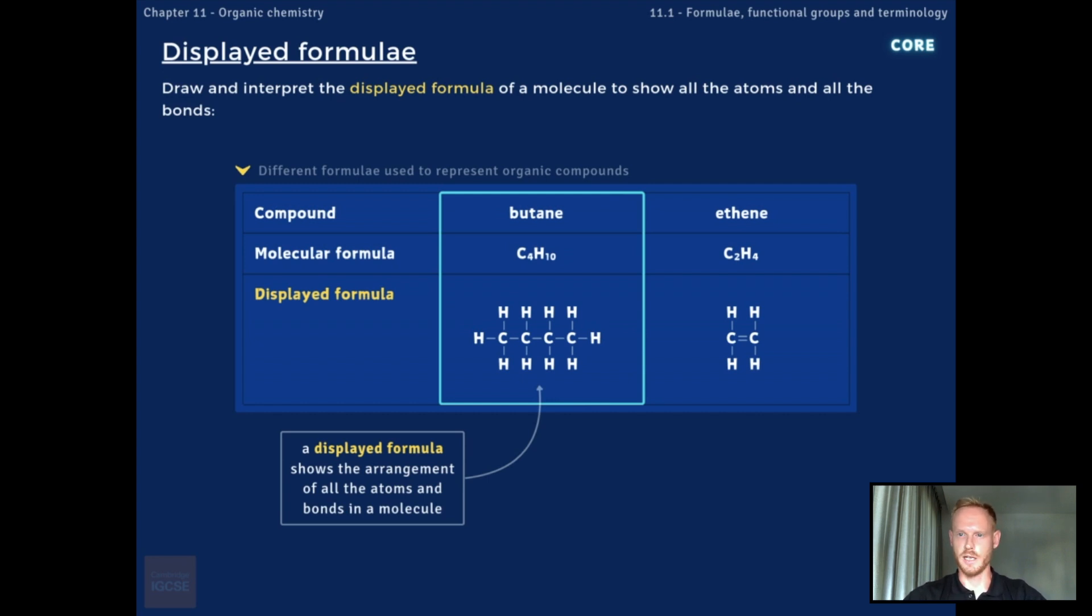The four carbon atoms are arranged in a straight line, with each forming single bonds with four other atoms. Note that double bonds are represented by two lines, and triple bonds by three lines.